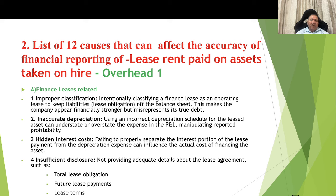There are 12 causes that can affect the accuracy of financial reporting of lease rent paid on assets taken on hire. Finance lease related causes: number 1 is improper classification — intentionally classifying a finance lease as an operating lease to keep lease obligations off the balance sheet, making the company appear financially stronger but misrepresenting true debt. Number 2 is inaccurate depreciation — using an incorrect depreciation schedule for leased assets can understate or overstate expenses, manipulating profitability. Number 3 is hidden interest cost — failing to properly separate the interest portion of the lease payment from the depreciation expense, which can obscure the actual cost of financing the asset.